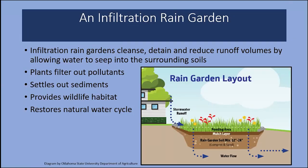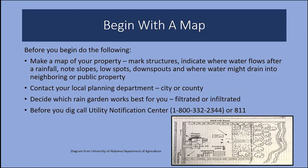An infiltration rain garden cleanses, detains, and reduces runoff volumes by holding the water and allowing it to seep into surrounding soils. The plants will filter out pollutants and provide habitat for wildlife. It also settles out sediment and restores the natural water cycle. Begin with a map — mark structures and indicate the direction of water flow. Note slopes, low spots, downspout locations, and areas where water might drain onto a neighbor's property. Contact your local planning department and, based on setbacks and requirements, decide which rain garden will work best — filtrated or infiltrated.